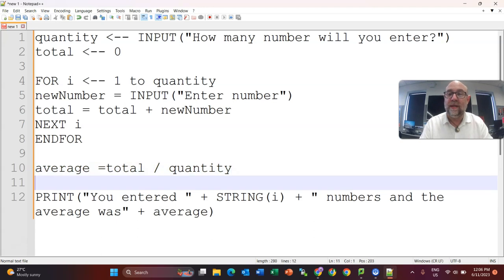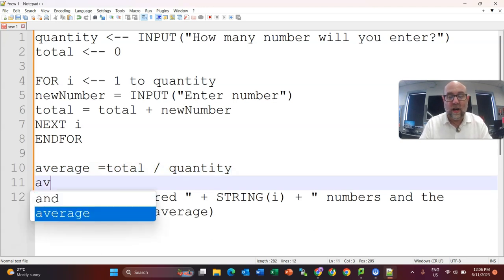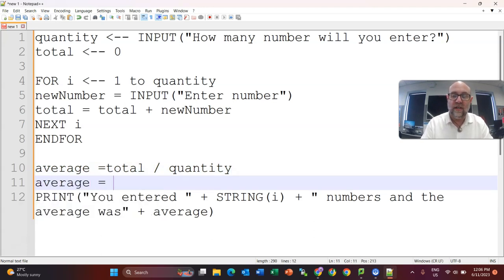And, if I wanted to be particularly clever about this, I might redefine average, so that it is average round, so I'm rounding it to two decimal places.